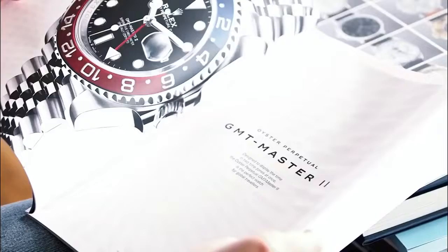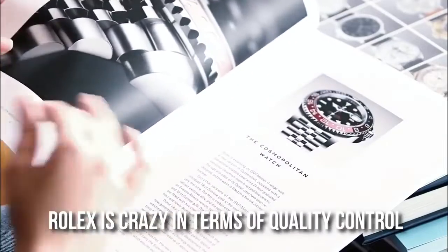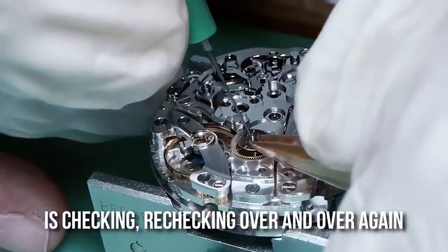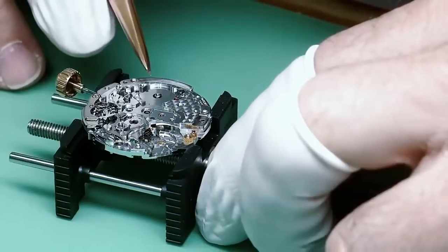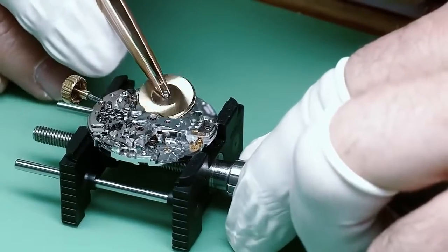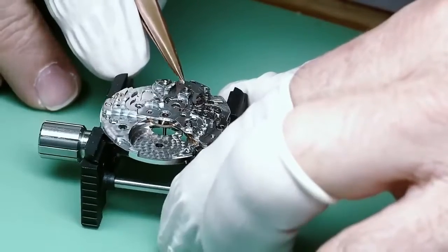It is definitely an understatement to say that Rolex is crazy in terms of quality control. A key theme involved with the manufacturing process is checking and checking over and over again. It almost feels as if their ultimate aim is ensuring that if a Rolex watch turns out to be defective or broken, it happens long before it is launched and enters the market.